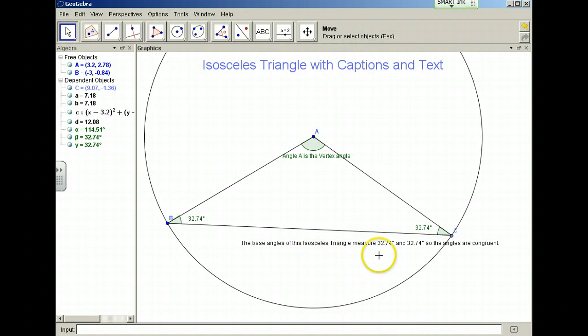And here's my text. The base angles of this isosceles triangle measure, both measure 32.74 degrees. So the angles are congruent. And this is the isosceles triangle theorem. That concludes our screencast.